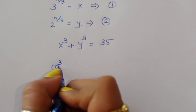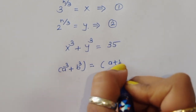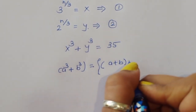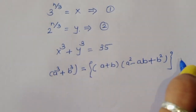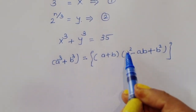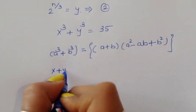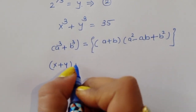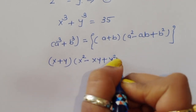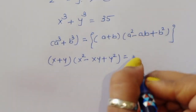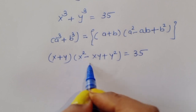Now we apply the formula a³ + b³ = (a + b)(a² − ab + b²). Using this formula, x³ + y³ = (x + y)(x² − xy + y²) = 35.